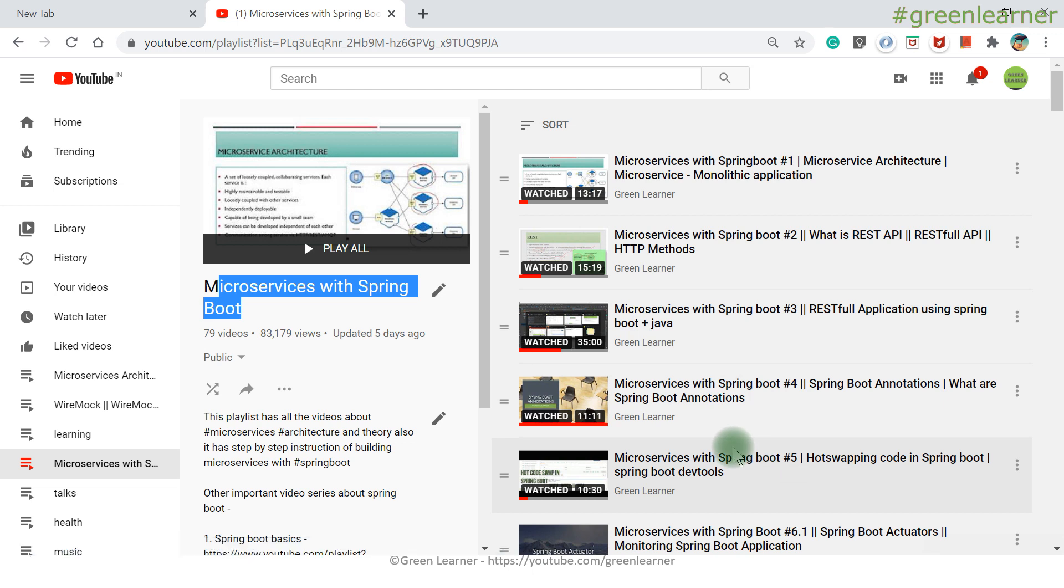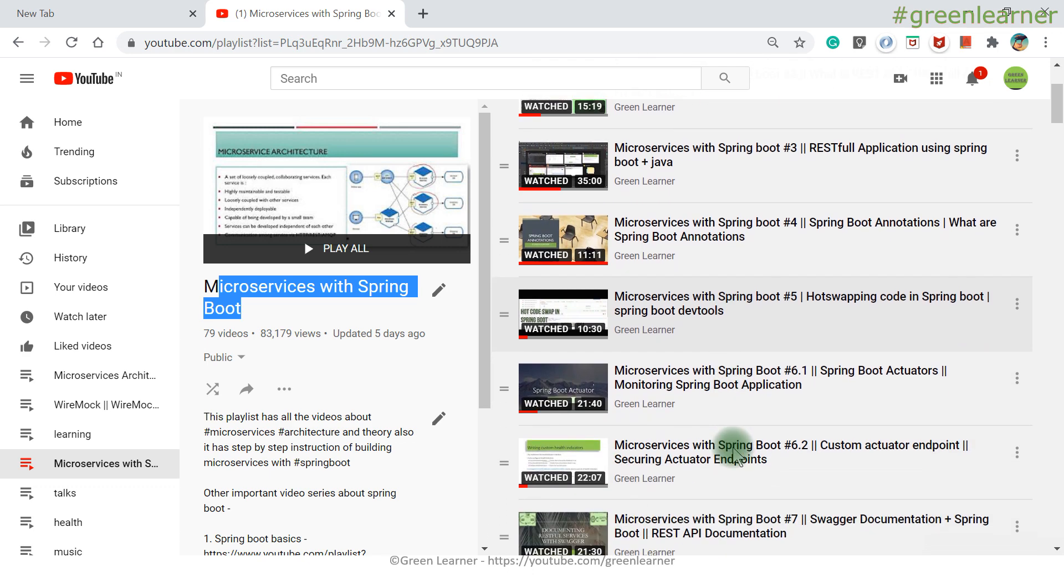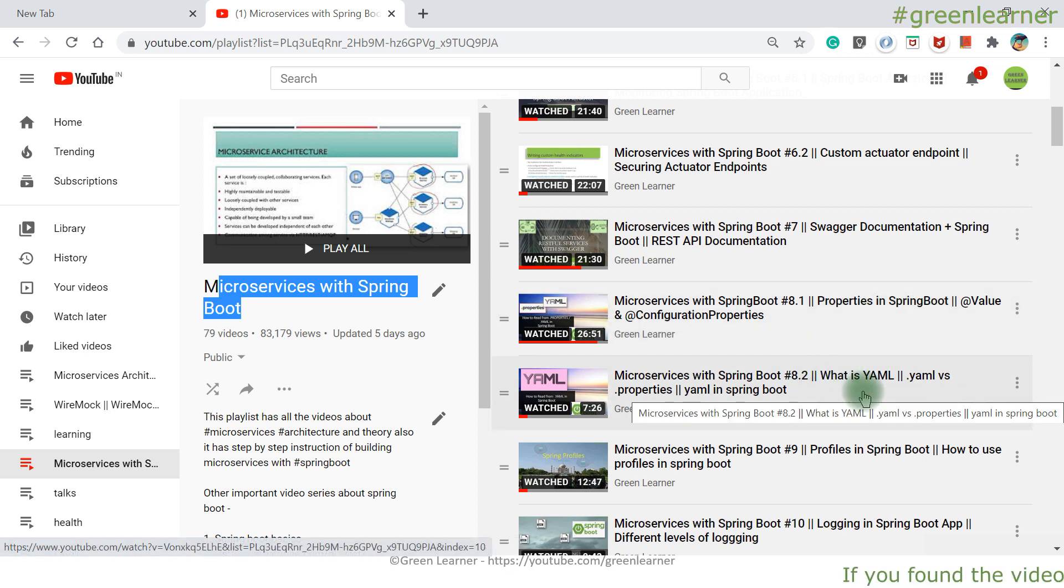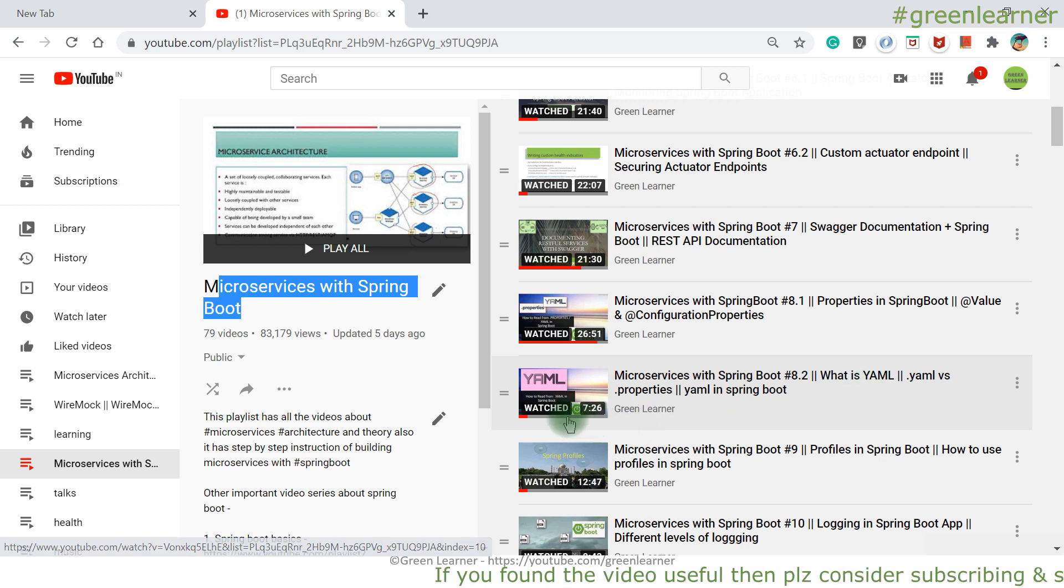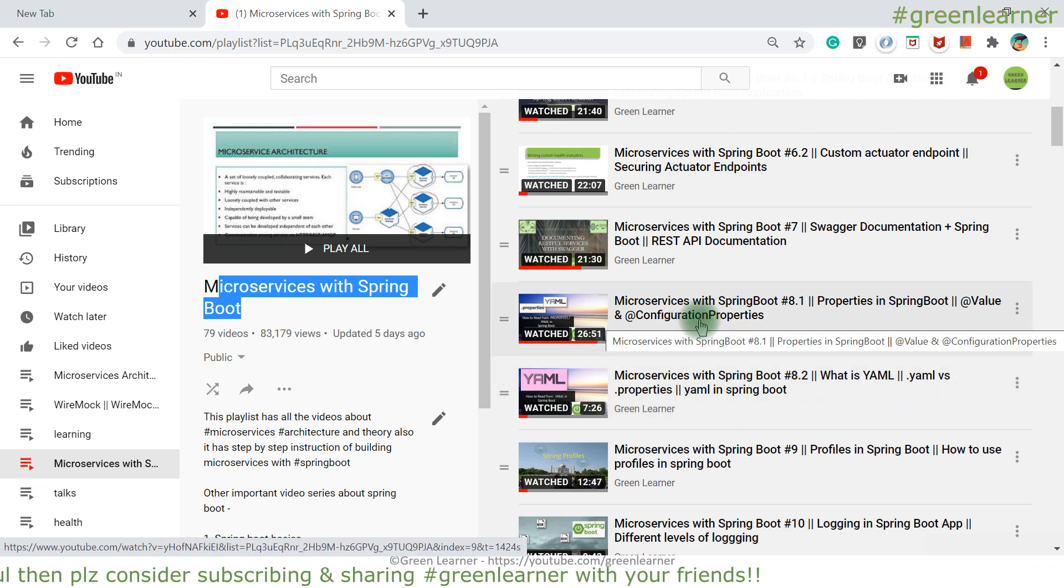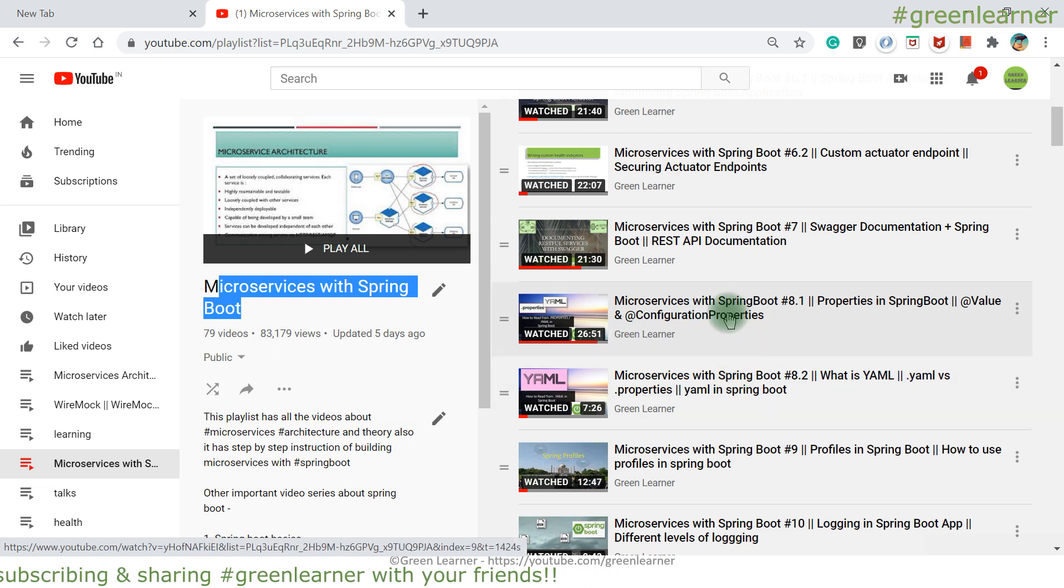Coming to the configuration part, there are many ways that you can configure, you can do the configuration. You might have heard about the properties file where you maintain the configuration. Video number 8.1 and 8.2 properties in Spring Boot and YAML. So properties file is the traditional way to maintain the configuration. But nowadays we have YAML, which is more readable. I have explained everything about this one, how you can manage the configuration in these two videos.